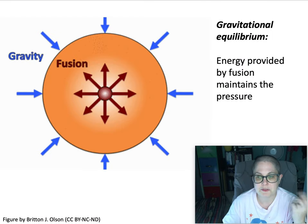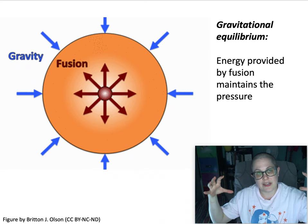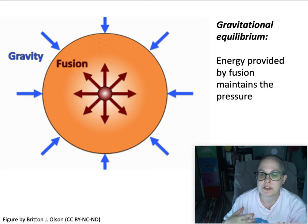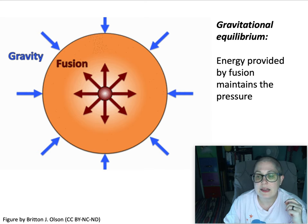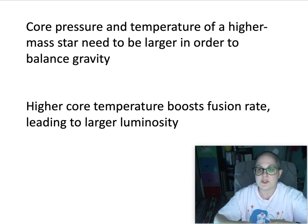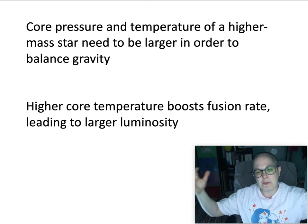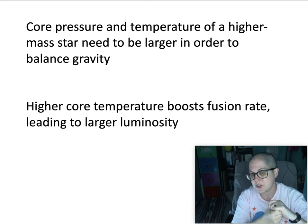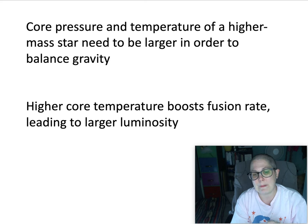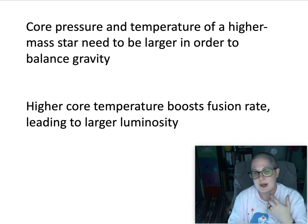These stars are all in some kind of gravitational equilibrium. The energy of fusion is pushing pressure outwards, and the gravity — the mass of the outer layers of the star — is pushing inward, and those about equal out, so it stays at a constant size. In a larger star you have more material pressing down, so the fusion from the core has to be pushing out even more. Because you have a bigger star, it's a lot hotter and higher pressure in the center of a big star than in a small star.